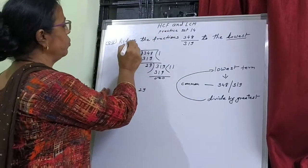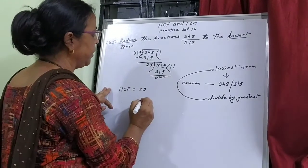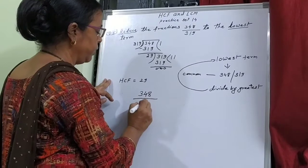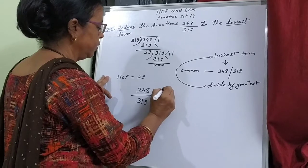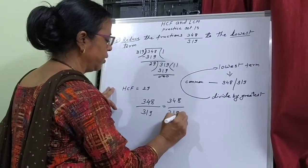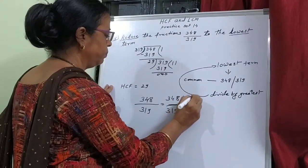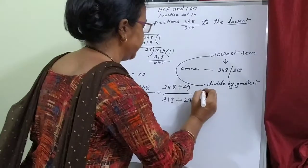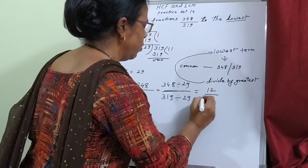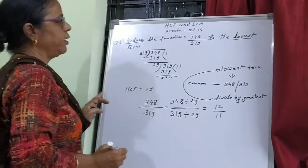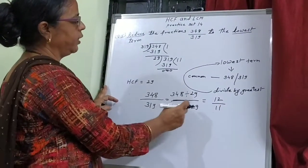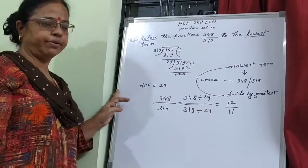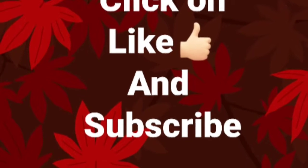Now we reduce the fraction. We divide both numerator and denominator by 29. 348 ÷ 29 = 12, and 390 ÷ 29 = 11. So the reduced fraction is 12 divided by 11, and the fraction is now in its lowest term.